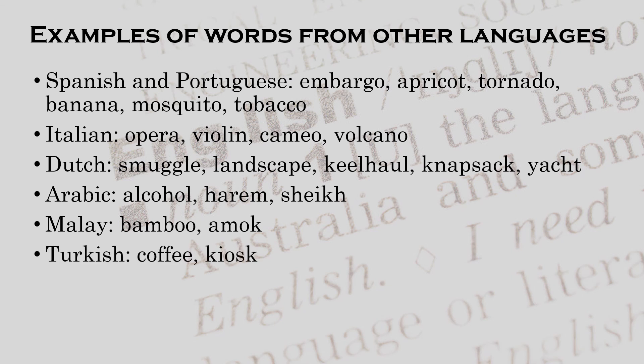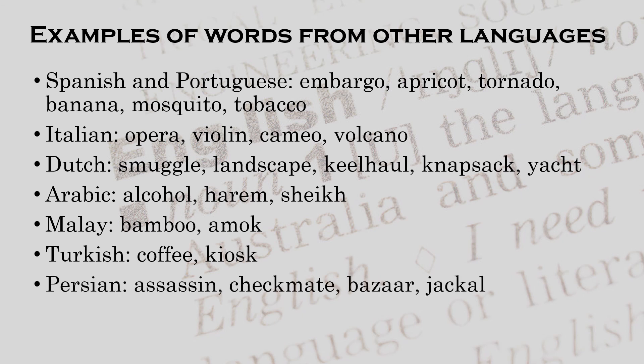From Turkish: coffee and kiosk. From Persian: assassin, checkmate, bazaar, and jackal. And we could give many more examples.